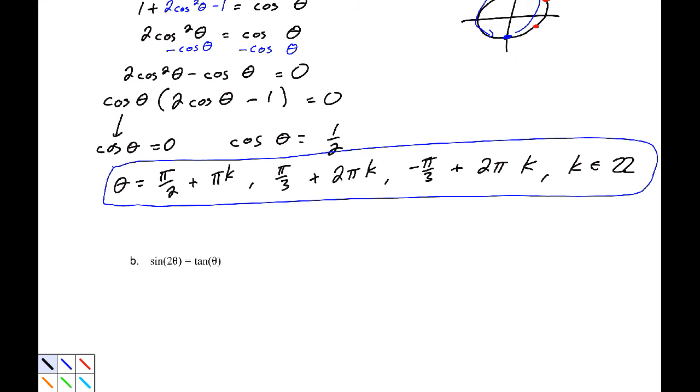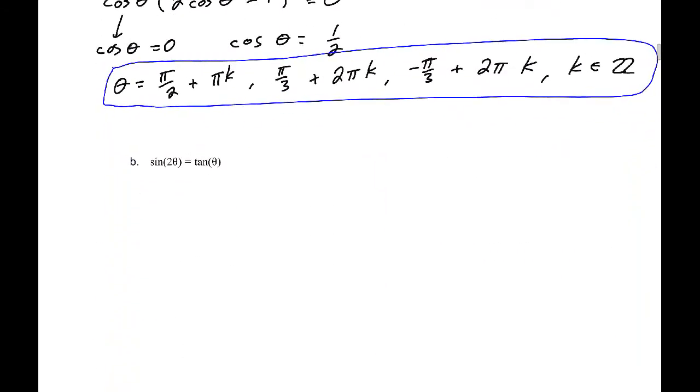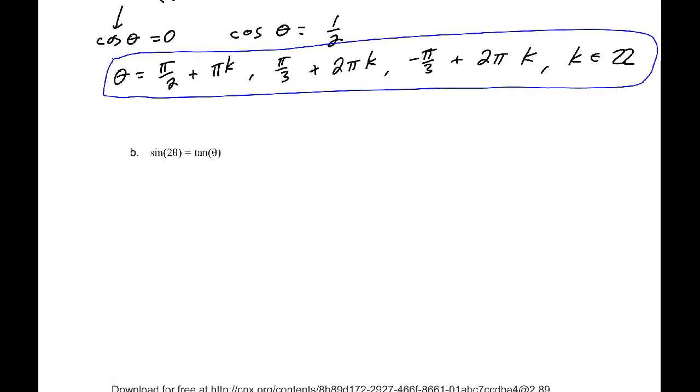Now, another trigonometric identity that we can use, we'll just scroll back up here, that will be useful here is tangent. We can write that as a ratio of sine over cosine. So, let's apply that identity to be sine 2 theta. I want to keep that as a quantity.